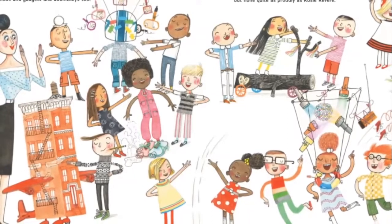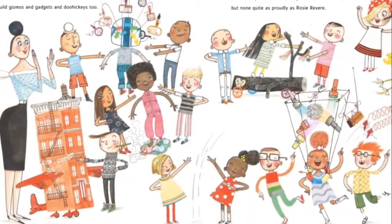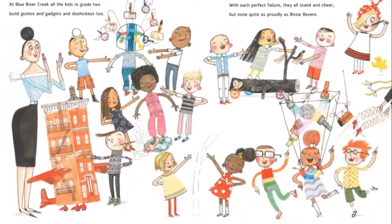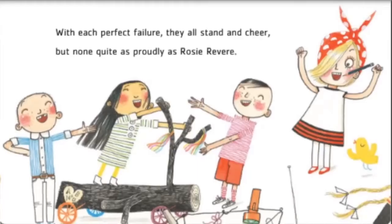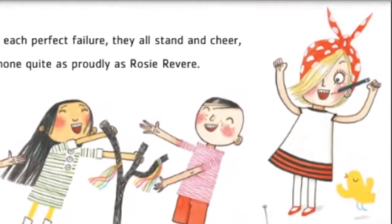At Blue River Creek, all the kids in grade two built gizmos and gadgets and doohickeys too. With each perfect failure, they all stand in cheer, but none quite as proudly as Rosie Revere.